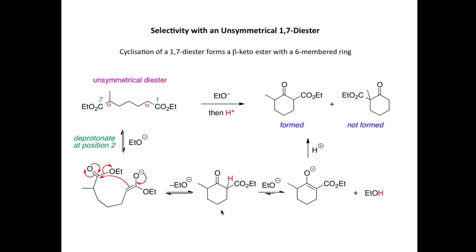However, when we make the six-membered ring, we can readily deprotonate the hydrogen atom in between the two carbonyls. The equilibrium lies towards the right-hand side because the anion is stabilized by delocalization over the ester and the ketone. This pushes the equilibrium towards the desired product. At the end of the reaction, we protonate this enolate ion and form this six-membered ring.